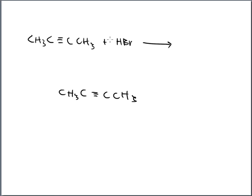With one HBr: one of the triple bond's bonds breaks, two sides of attachment open up. H goes on one carbon, Br goes on the other. Since neither carbon has any H's on it, it's symmetrical — I'll randomly place hydrogen on one side and bromine on the other. That's all it is.